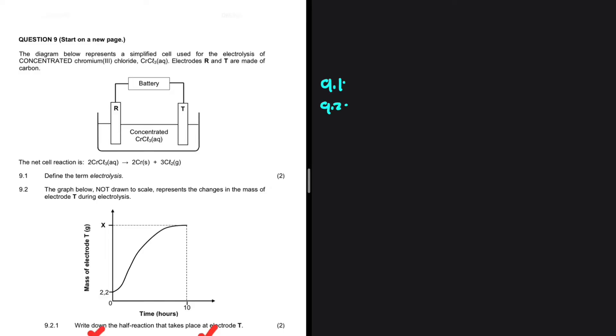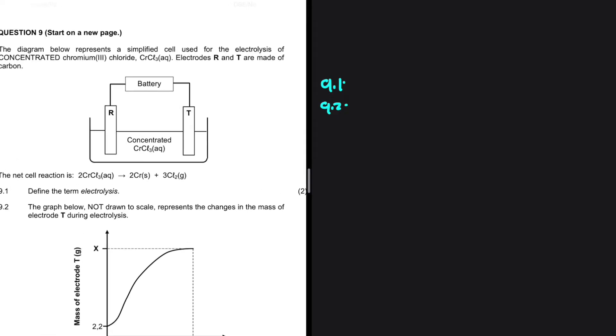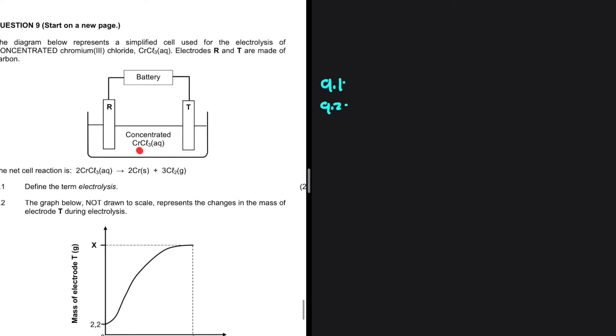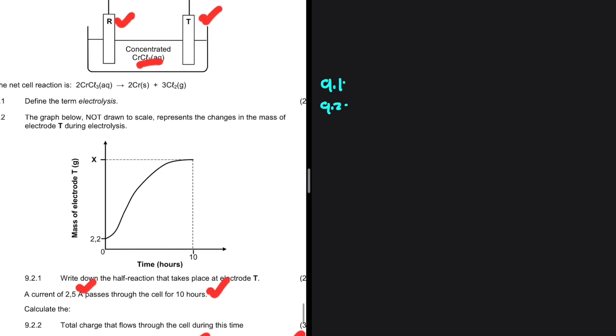9.2, on the other hand, the graph below, not drawn to scale, represents the changes in the mass of electrode T during electrolysis. We have the electrolysis of concentrated chromium chloride, CrCl3. We have two electrodes, R and T.